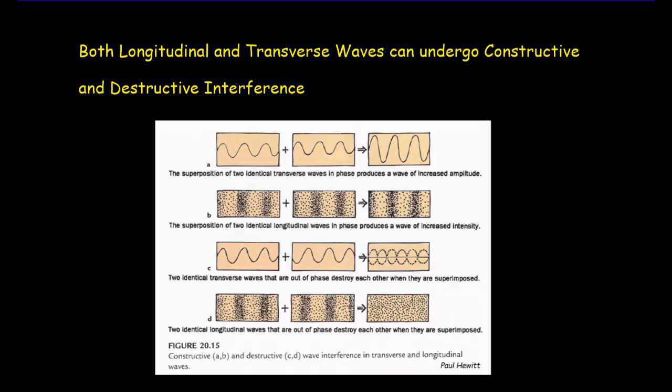Now, as it so happens, both longitudinal and transverse waves can undergo constructive and destructive interference. In this first case, we've got two transverse wave trains. They're supposed to be identical and they'd both be moving in the same direction. So we can imagine those being superimposed directly on top of each other and adding up. We'd get constructive interference. We'd get a much bigger amplitude. That shouldn't be too surprising. It just means you've got two waves adding up.